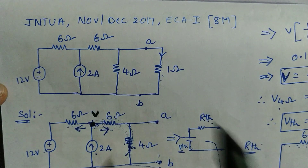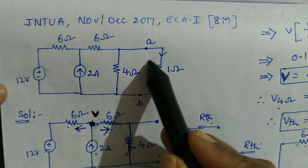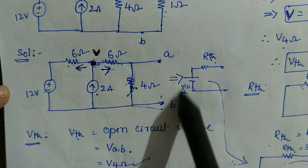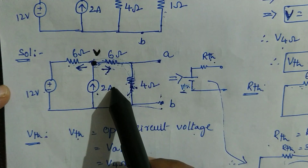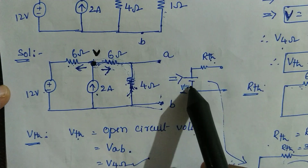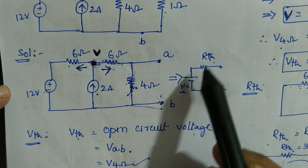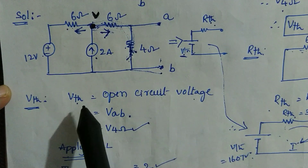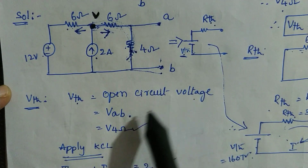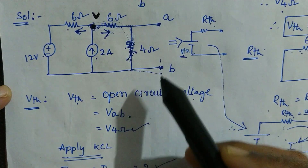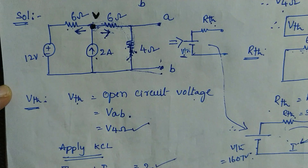The first rule is that we have to disconnect this particular element. We will be getting the circuit like this. This circuit has to be transformed to the Thevenin's equivalent circuit with V Thevenin and R Thevenin. V Thevenin means open circuit voltage, that is VAB. Here we have the open circuit across AB, so VAB will be considered as Thevenin's voltage.